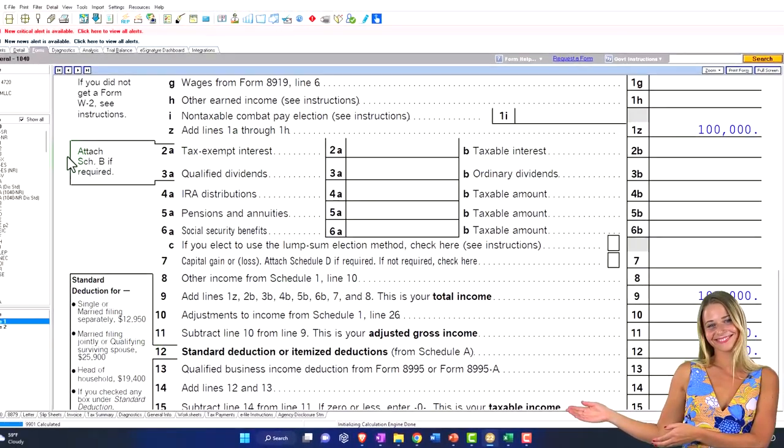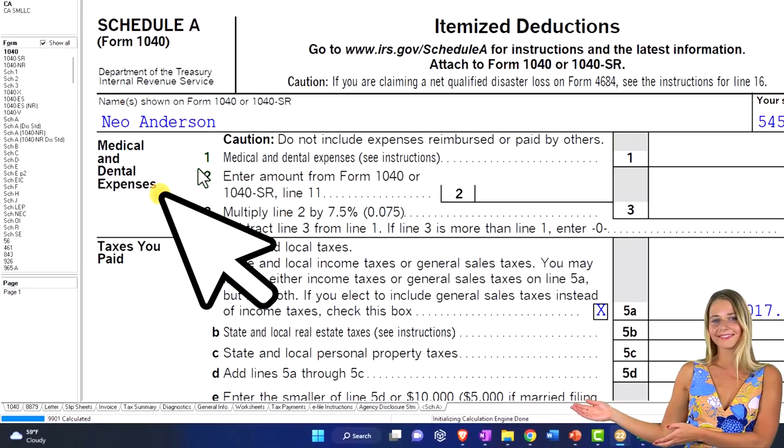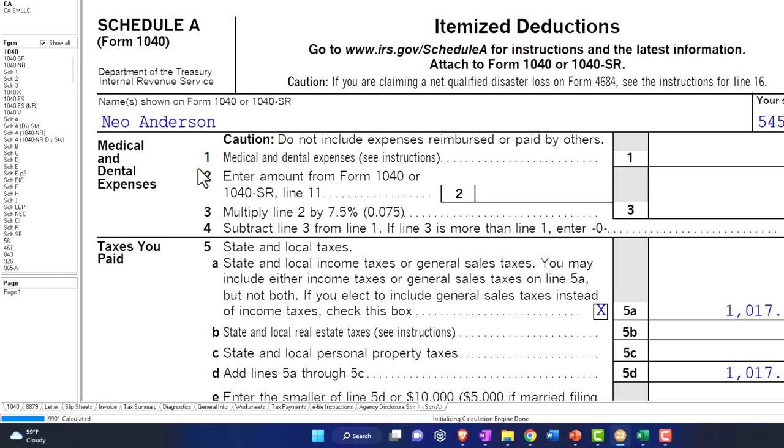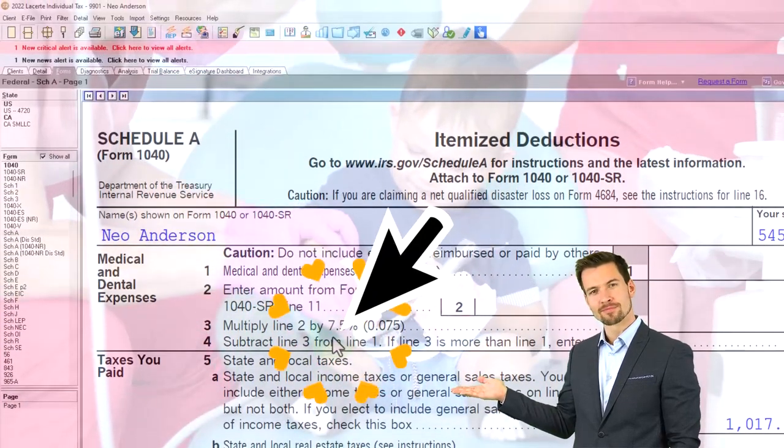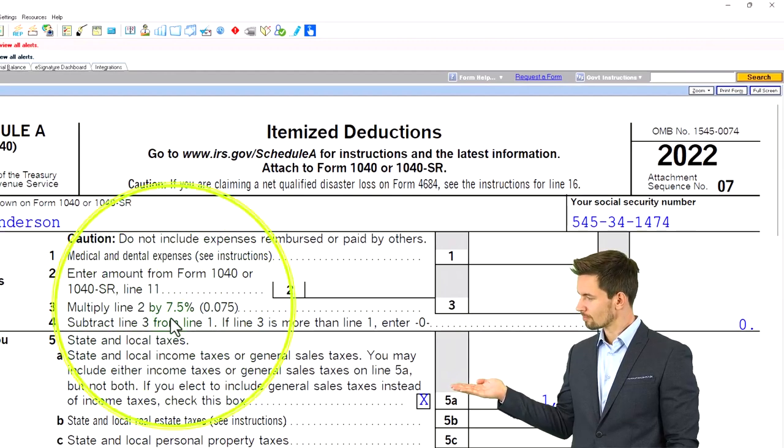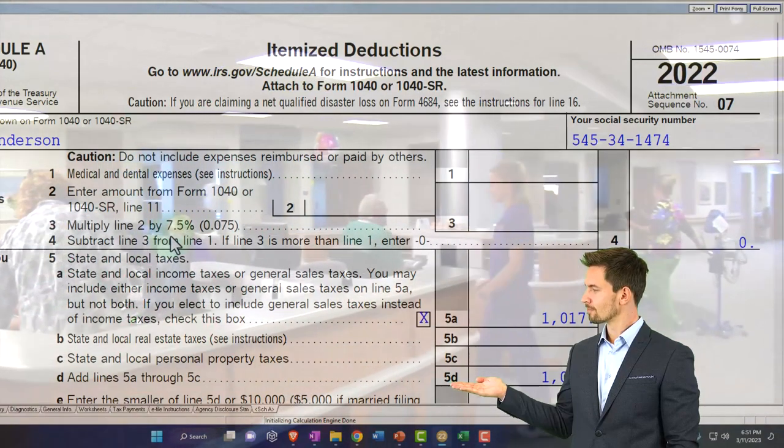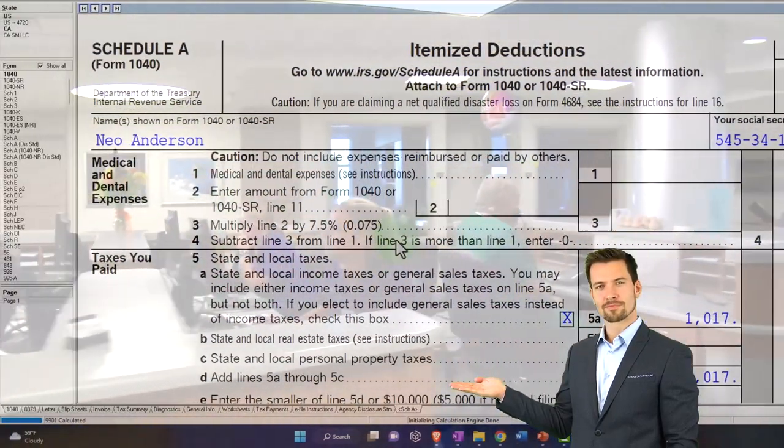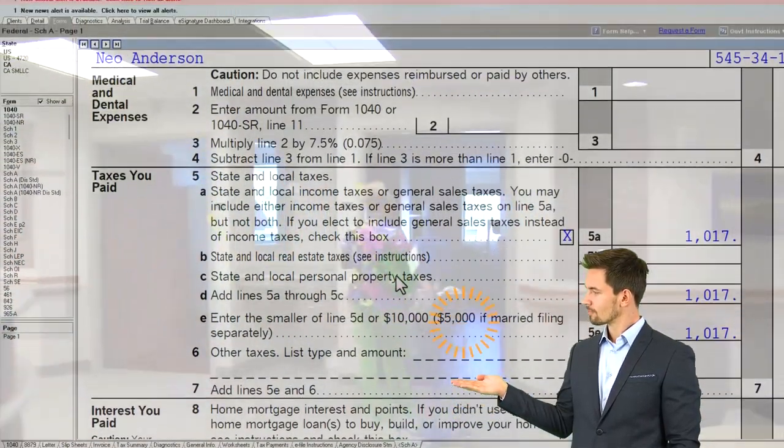Let's see the Schedule A itself, which is right here. We can see the major components: medical and dental expenses. The medical and dental is probably not going to be the main thing to push people over to itemizing, because there's this 7.5% floor you have to clear before the medical expenses start kicking in, and then you still have to get over the standard deduction. If someone had a really big issue, like they went to the hospital after a car accident or something, then they might have severe medical expenses that could bring them over into itemizing, but most of the time that's not the big factor.